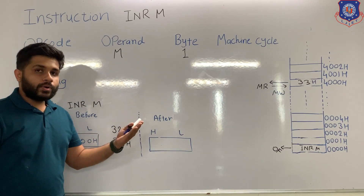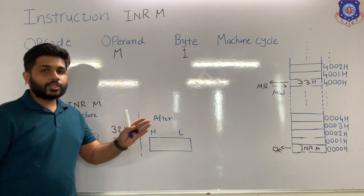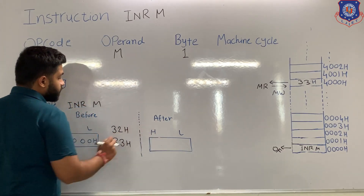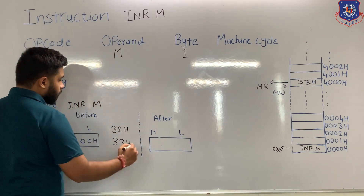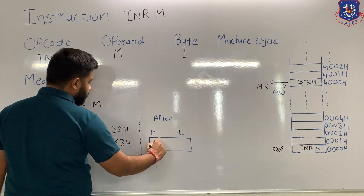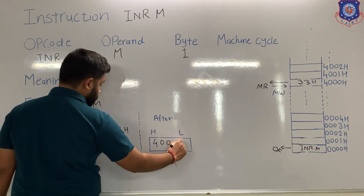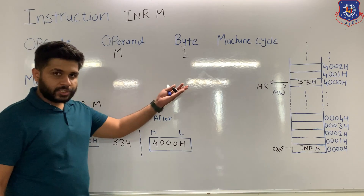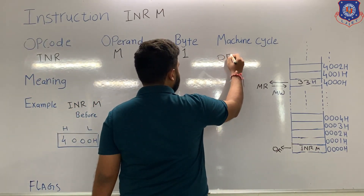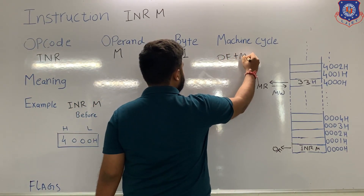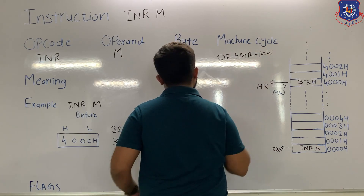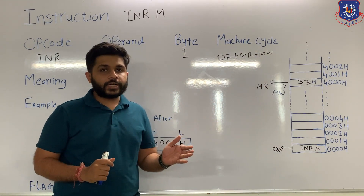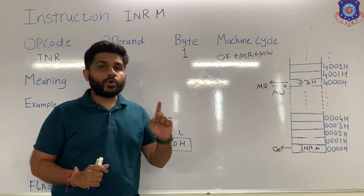This is how this instruction is executed. After the execution, the content of the HL pair will remain unchanged, that is 4000H. The machine cycles required are: opcode fetch, plus memory read, plus memory write. For the INR M instruction, all the flags will be affected apart from only one flag, that is the carry flag.